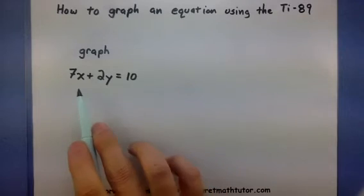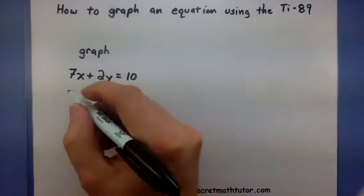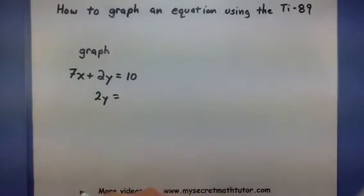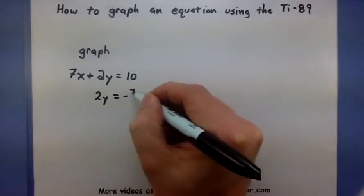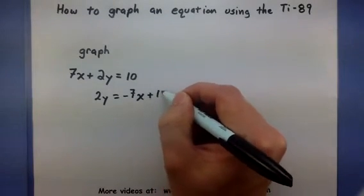So let's start that. What I'm going to do is start shifting things around and getting y all by itself. So I'm going to subtract 7x from both sides. This will give us 2y equals negative 7x plus 10.